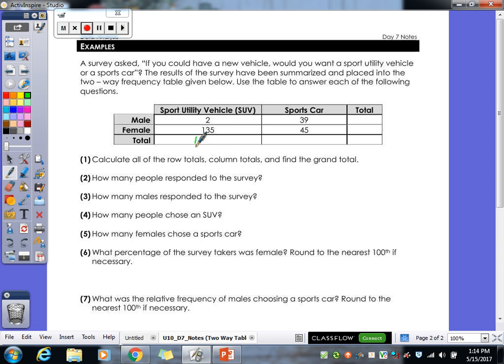So of the SUVs, if I add those up, it's 137 for SUVs. What is our total for sports cars? 84. Let's add up our males. So 2 plus 39, so 41 males. 135 plus 45, 180 for females. So 41 plus 180 gives us 221. We just have to check, is 137 plus 84 also 221? Yes it is. As long as those all add up, your marginal frequencies all add up to be the same number, we're good to go.